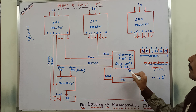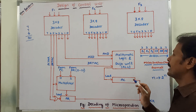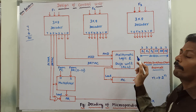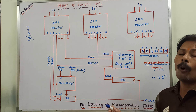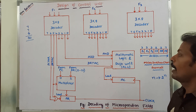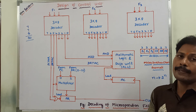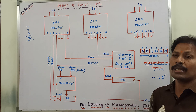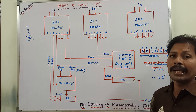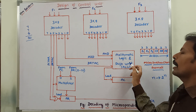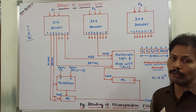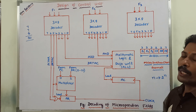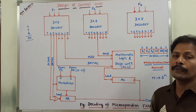Next is the arithmetic logic and shift unit. It is used for performing arithmetic operations, logical operations, and shift operations. Arithmetic operations include addition, subtraction, complement, increment, etc. Logical operations include logical AND, logical OR, and complement operations. Shift operations include shift left and shift right operations.